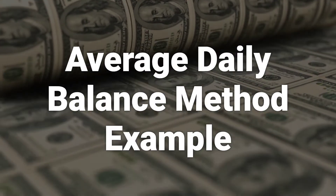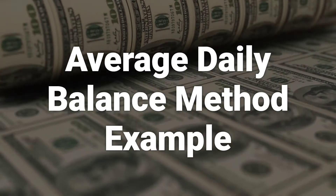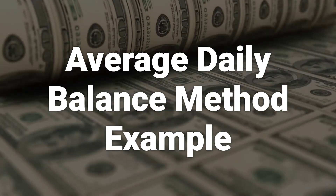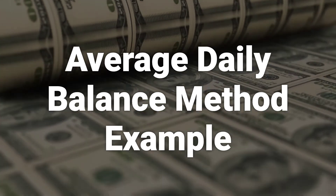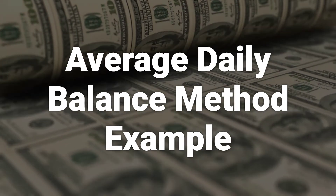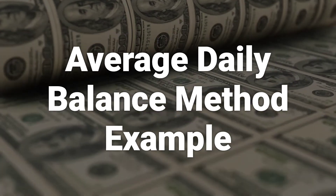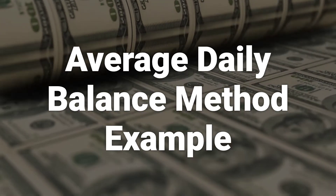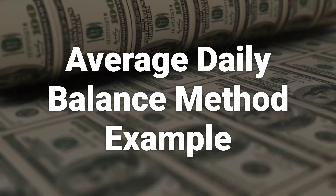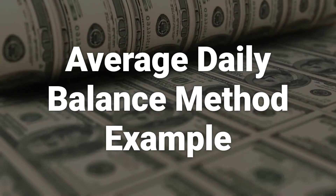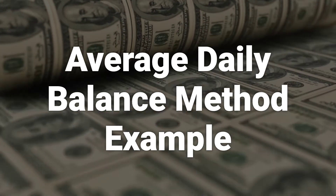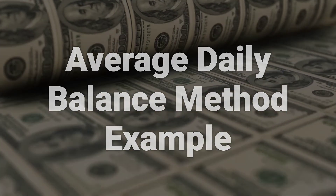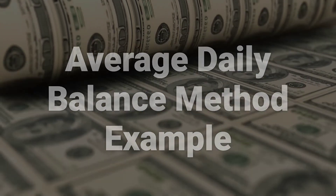Here's a simplified example of the Average Daily Balance Method without compounding. Suppose a credit card has a balance of $1,000 at the beginning of the billing period and an APR of 20%. That APR translates into a daily periodic rate of about 0.055%, or 0.00055.